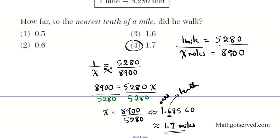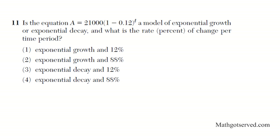Let's move on to question 11. Is the equation A equals 21,000 times (1 minus 0.12) to the T a model of exponential growth or decay, and what is the rate percent of change per time period? Let's go over our model for exponential growth real quick.